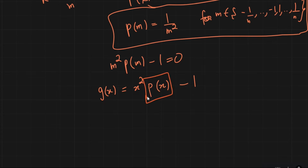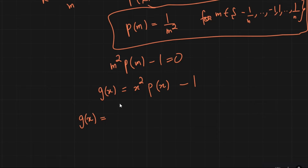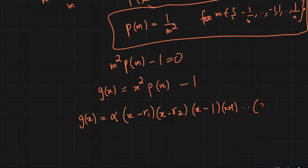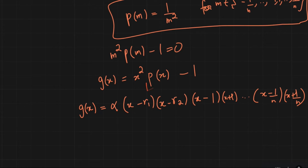Since p(x) is degree 2n, x² times that is degree 2n+2, so g(x) is a degree 2n+2 polynomial. I know 2n of its roots. The other two, let me call them r1 and r2, so I can write g(x) = (x - r1)(x - r2)(x - 1)(x + 1)···(x - 1/n)(x + 1/n). Because p(x) is monic, x²p(x) is also monic, so g(x) is monic — alpha is just 1.